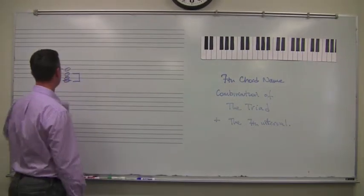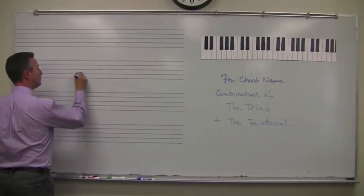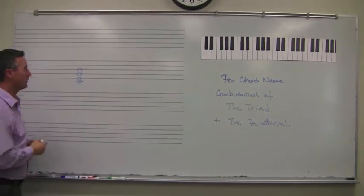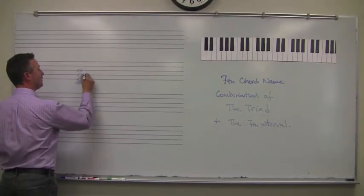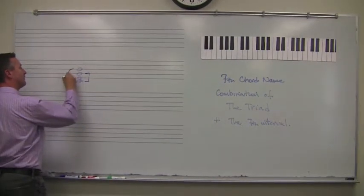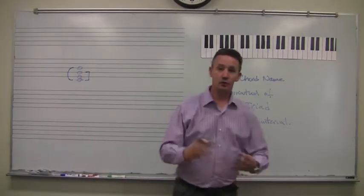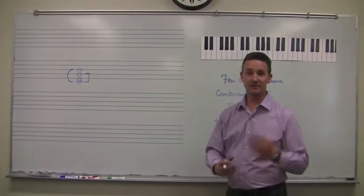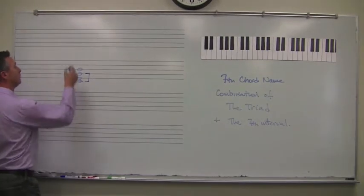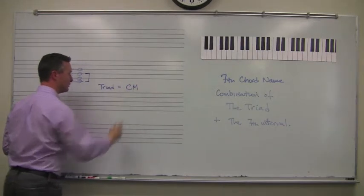So let's look at that specifically. The name of the seventh chord is a combination of the triad that you find at the bottom of the seventh chord and the seventh interval that is between the root and the top note of the seventh chord. Here we have a standard seventh chord. Hopefully by now you're familiar enough with triads that you could work out quite quickly what that triad is — C, E and G. The triad at the bottom of the seventh chord is a C major triad. The triad equals C major.